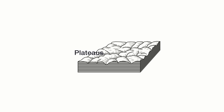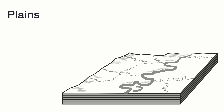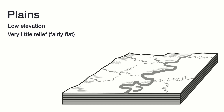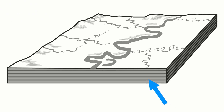Finally, we have a third type of landscape called a plain. A plain is low in elevation, has very little relief, and, like a plateau, has flat horizontal bedrock layers, which can be seen in the diagram.